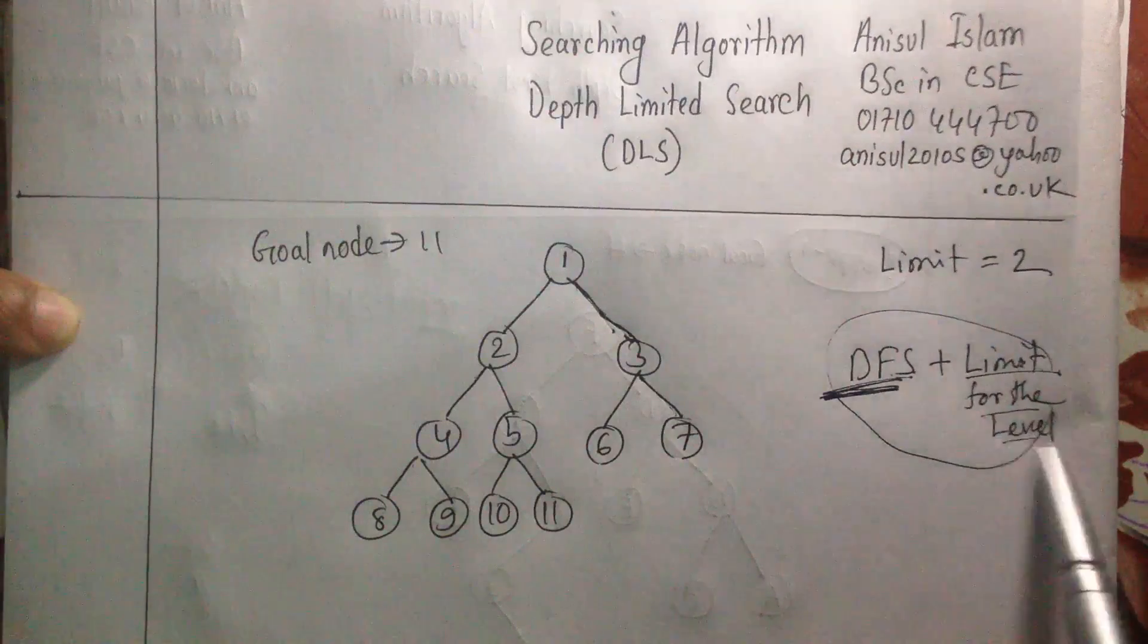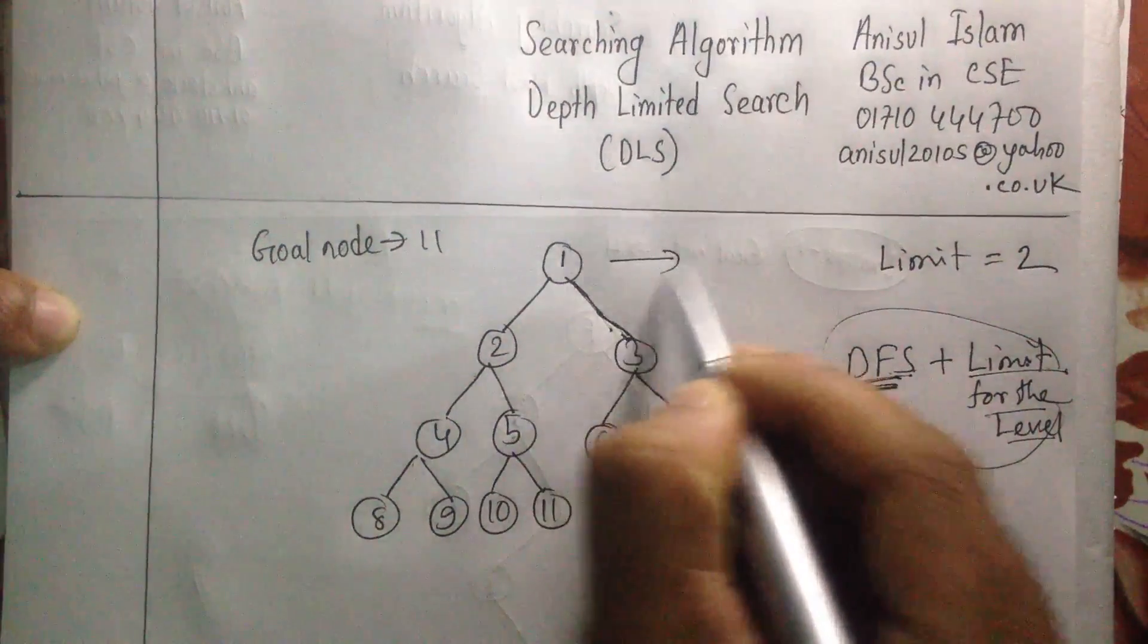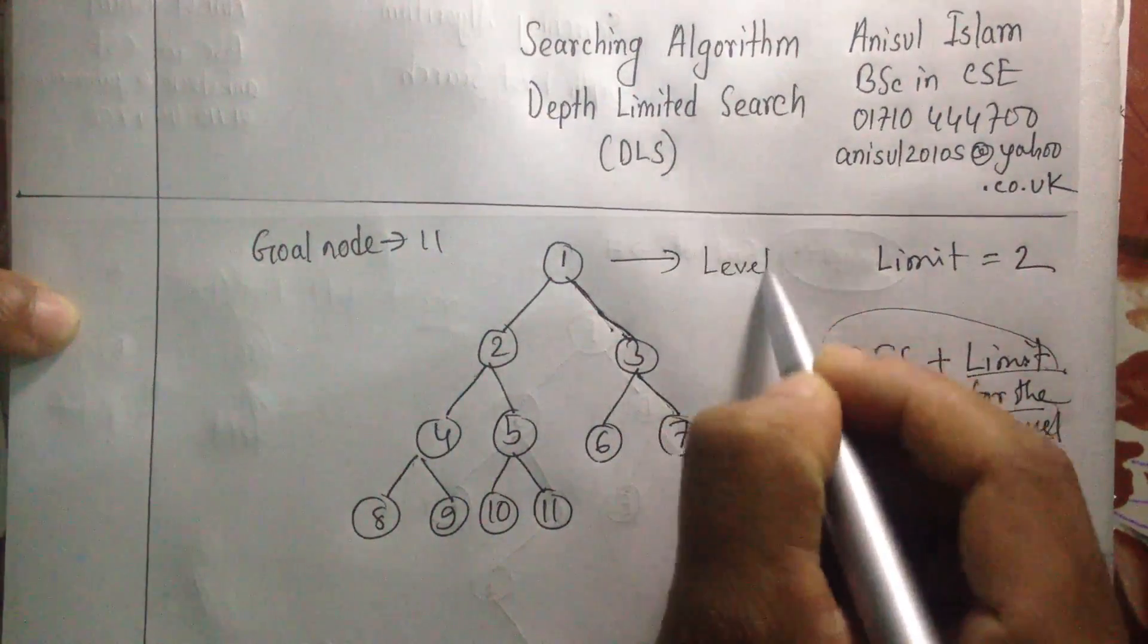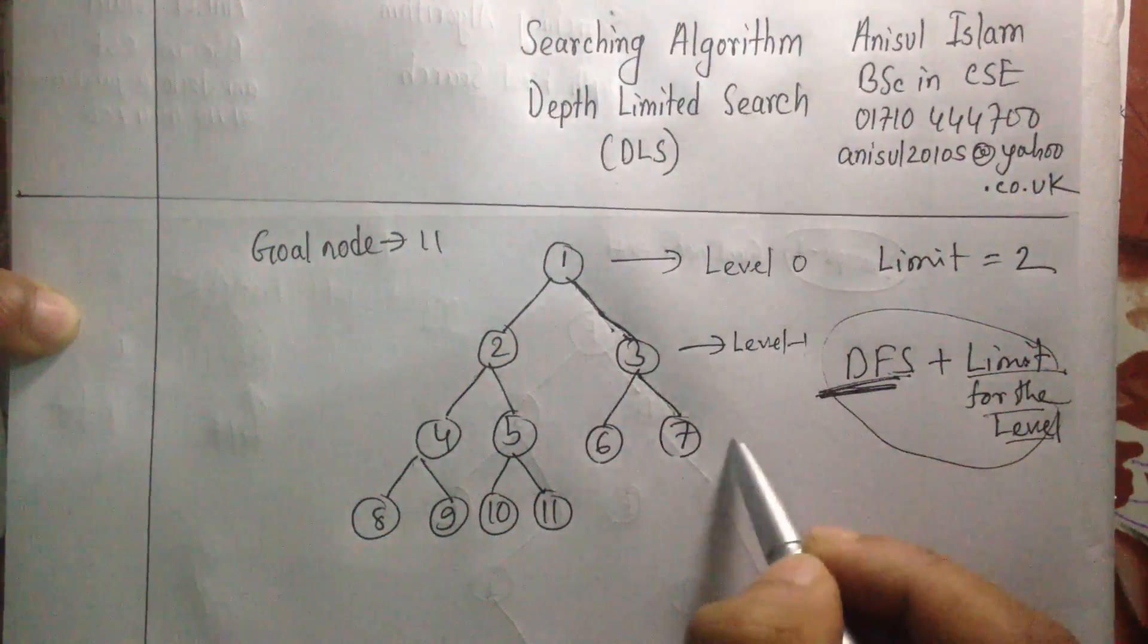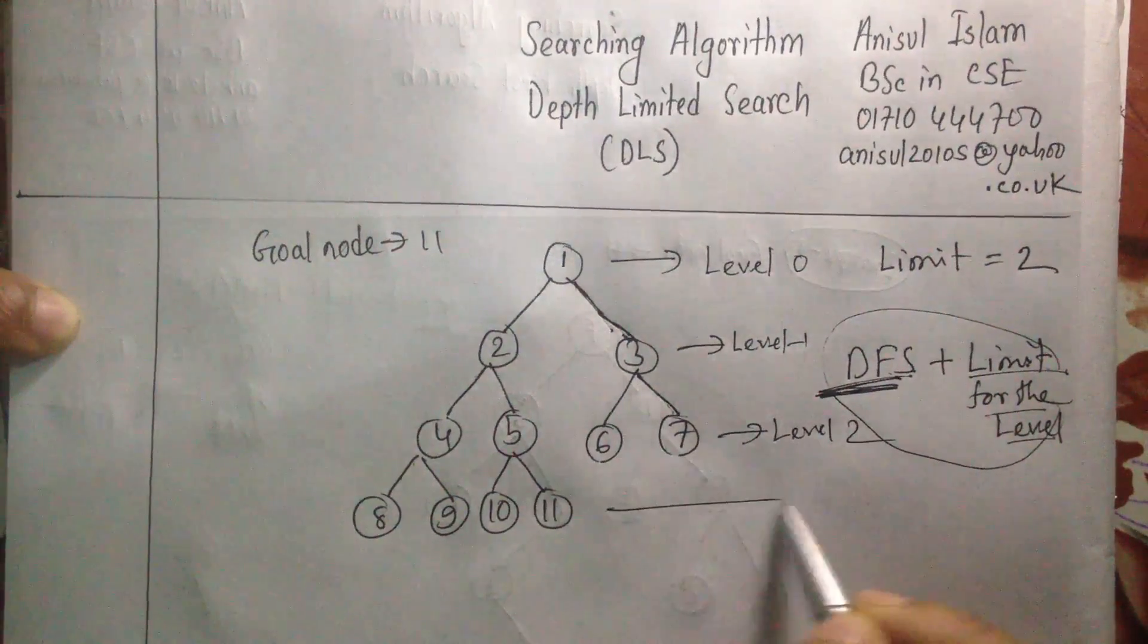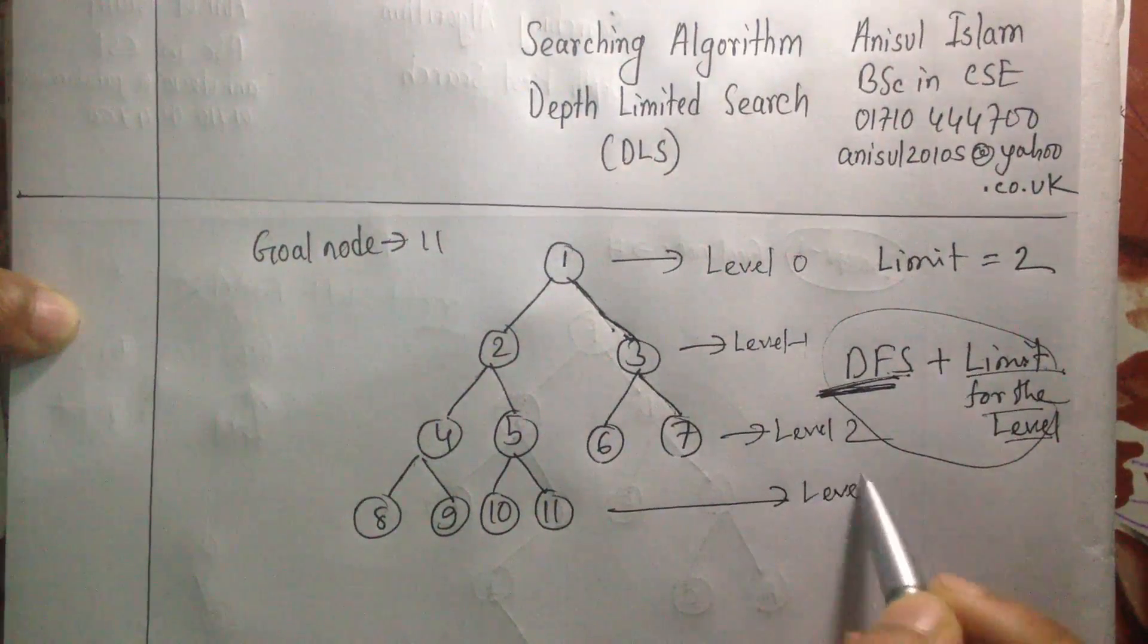But there will be some limitation of the level. So you'll have a limit for the level. That means we already have seen that we can call this one as level 0. We can call this one as level 1. We can call this one as level 2. And we can call this one as level 3.